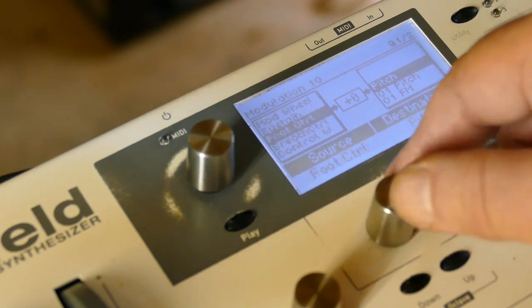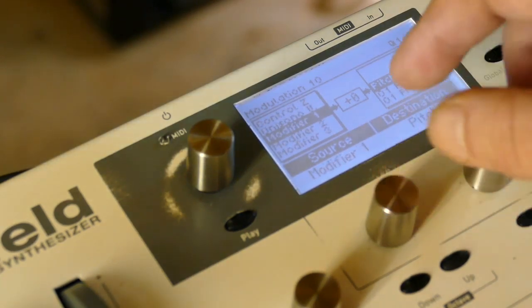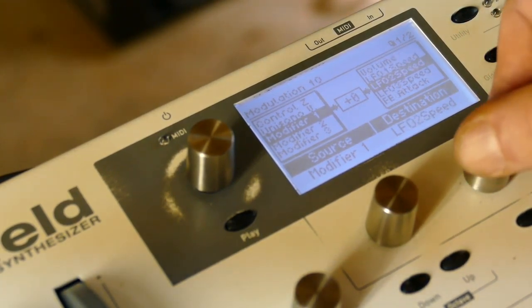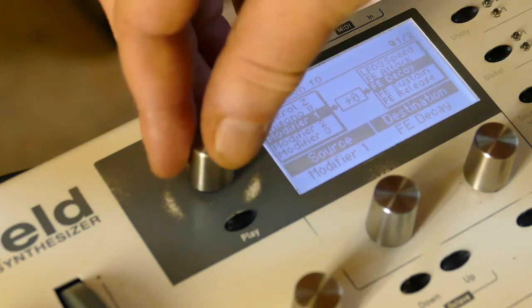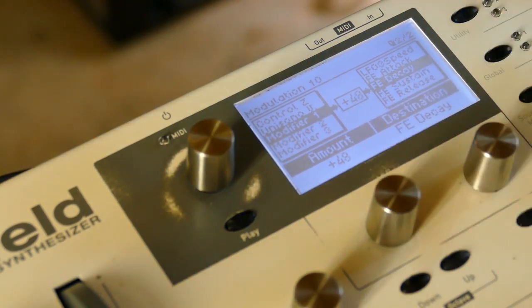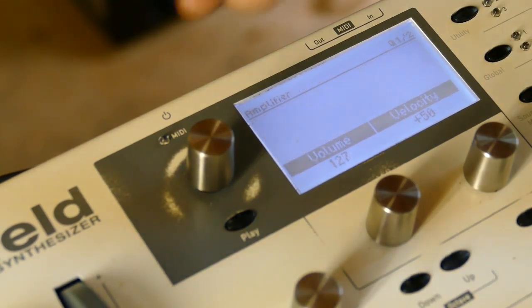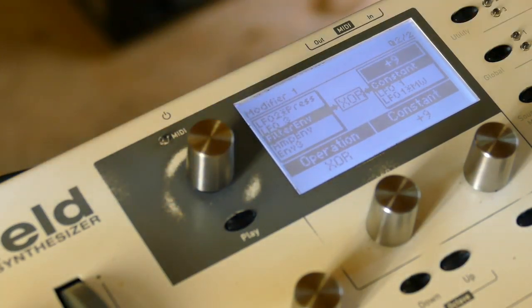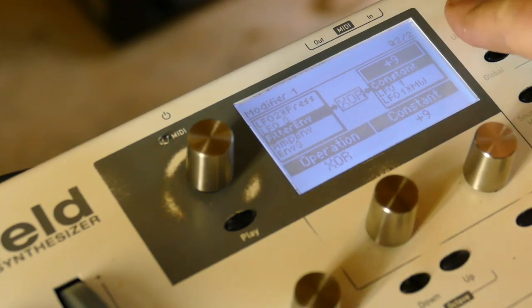We'll take another modifier, the same modifier, and apply it to filter decay plus 48. So the pulse width is being recursively modulated by the filter envelope, which is controlling the pulse width, and the filter envelope is being recursively modulated by modifier one, which is filter envelope X or plus 9. That's semi-randomly chosen, but you got to play around with stuff.